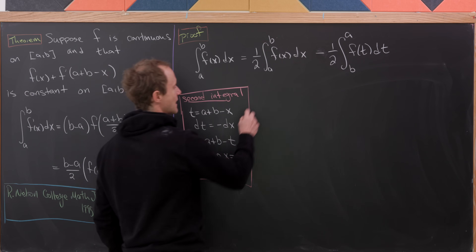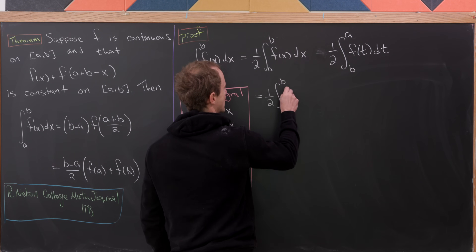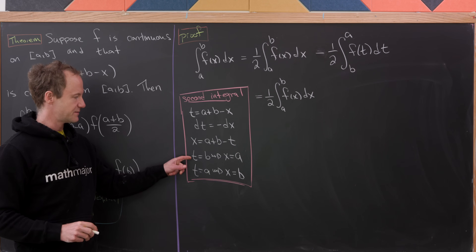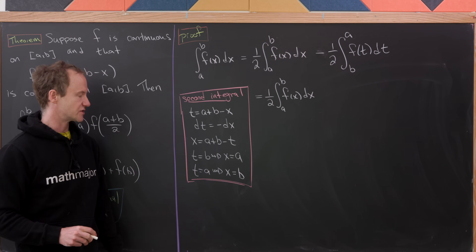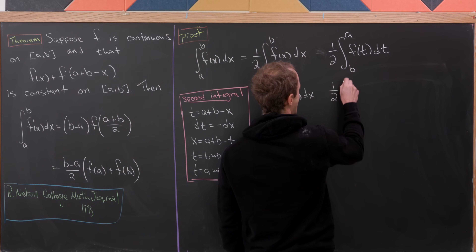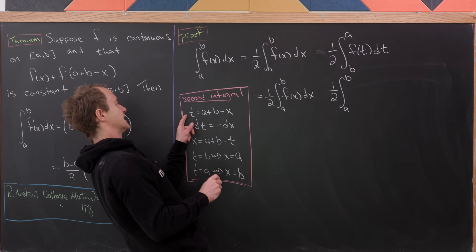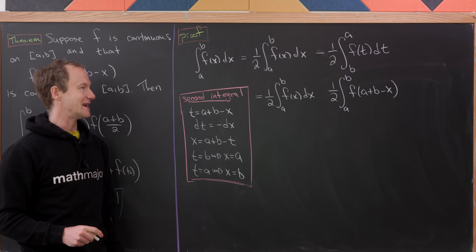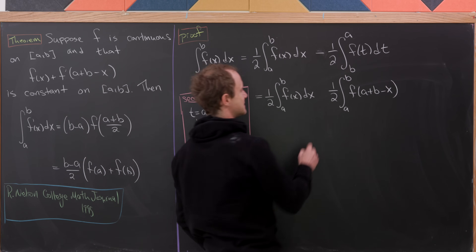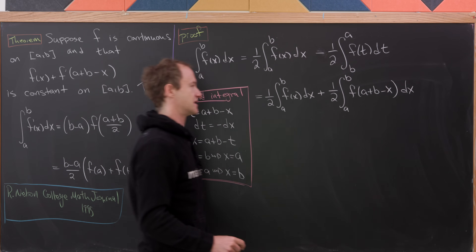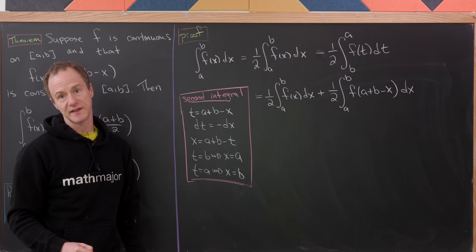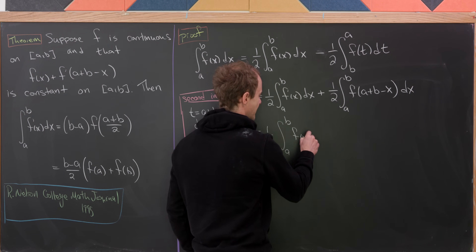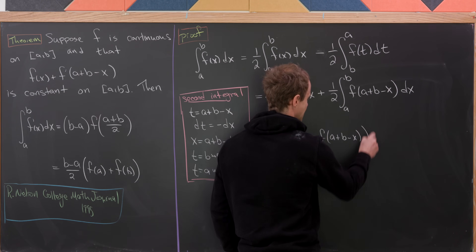We apply that substitution to the second integral while bringing the first integral down unchanged: (1/2) times the integral from a to b of f(x) dx. Changing the order of integration back to the original, we get (1/2) integral from a to b of f(a + b - x), and since dt = -dx, the minus flips back to a plus, giving dx. Since we're integrating over the same interval, we push the two together to get (1/2) times the integral from a to b of [f(x) + f(a + b - x)] dx.